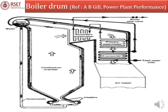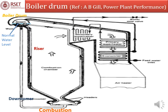This is a typical boiler drum arrangement. We can see the boiler drum, and this is the water level to be maintained — the normal water level, NWL. Below the drum is the downcomer, a tube through which water comes down. On the right side is the riser tube, through which water that has come down through the downcomer rises because of heat from the combustion chamber.